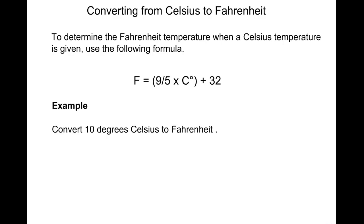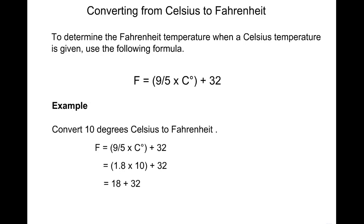Convert 10 degrees Celsius to Fahrenheit. First, take 9/5 times the degrees in Celsius, then add 32. So 9/5 is equivalent to 1.8. Multiply that by 10, then add 32, which comes to 18 plus 32, resulting in 50 degrees Fahrenheit.